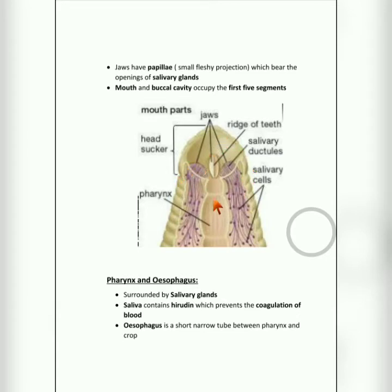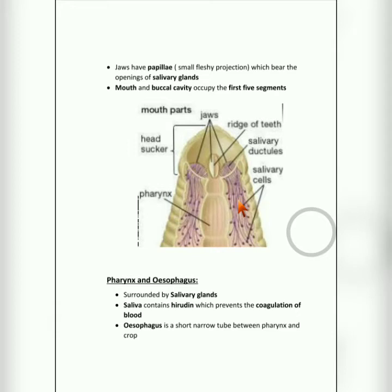The second part is the pharynx and esophagus. The pharynx is surrounded by salivary glands, which secrete saliva that helps in digestion. This saliva secreted by leech contains a substance called hirudin — H-I-R-U-D-I-N. Hirudin prevents the coagulation of blood, meaning it prevents blood from clotting. Since leeches suck blood, hirudin keeps the blood flowing so the pharynx can continuously suck. After the pharynx, a short tube called esophagus connects the pharynx to the crop.